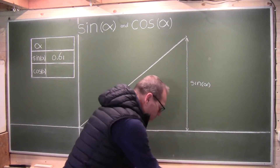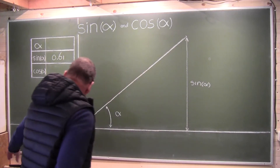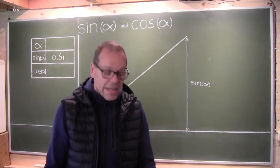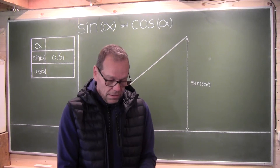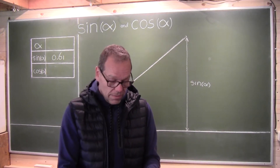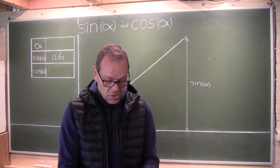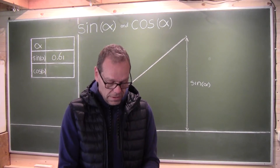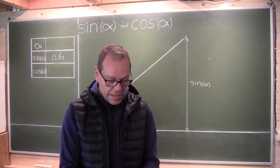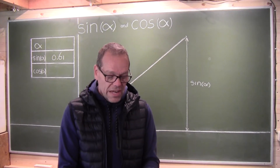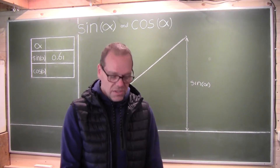Now this is very low-tech, but actually not knowing what the angle is, I can now figure out — reverse engineering — what this angle was. Sine inverted: the inverted sine of 0.61 turns out to be about 37.6 degrees.